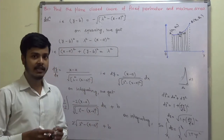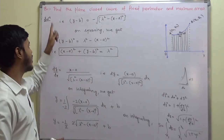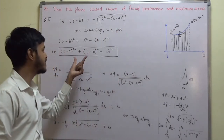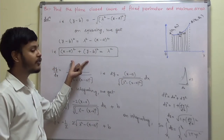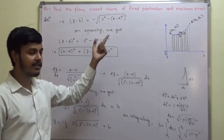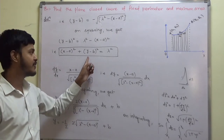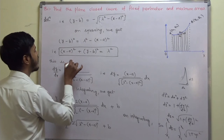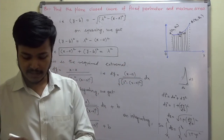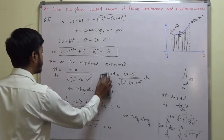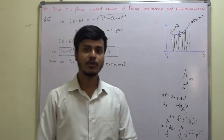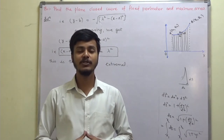On squaring both sides: (y − b)² = λ² − (x − a)², which gives (x − a)² + (y − b)² = λ². This is nothing but the equation of a circle. So in the examination, the question may be asked: show that the plane closed curve of fixed perimeter and maximum area is a circle — which is a well-known result. This completes the problem. The required extremal is a circle. I hope this is clear; thank you for watching.